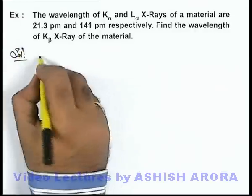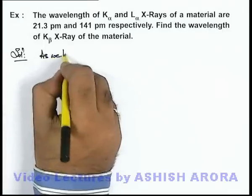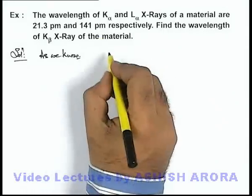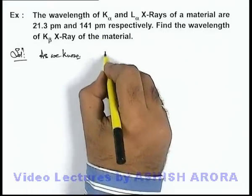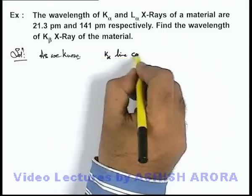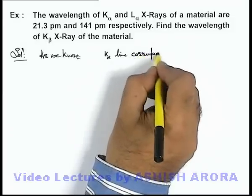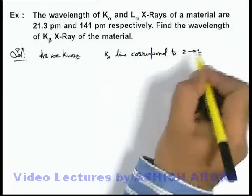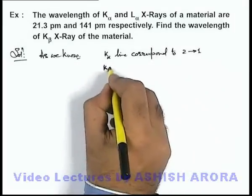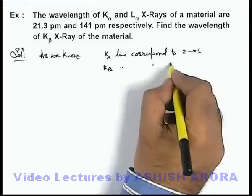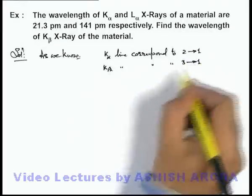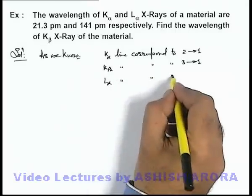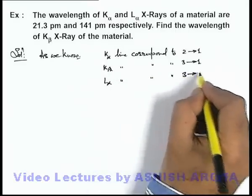As we know, if we talk about the transition corresponding to various characteristic X-rays, the K-alpha line corresponds to the transition from 2 to 1, and K-beta line corresponds to the transition from 3 to 1. Similarly, L-alpha line corresponds to the transition 3 to 2.